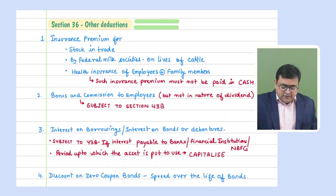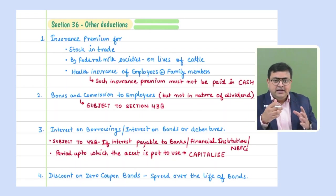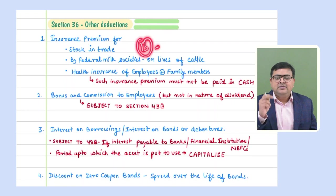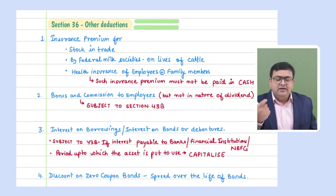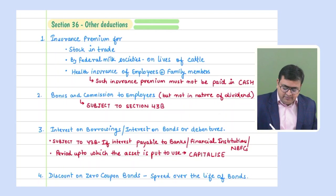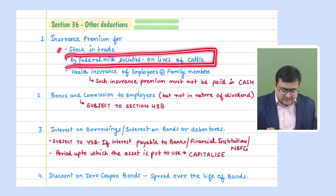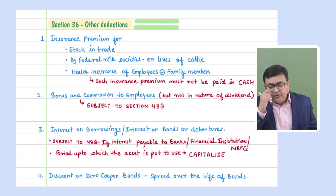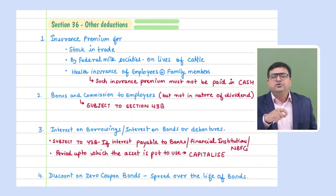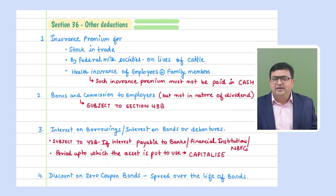First, insurance premium: if it's for a building it's under Section 30; for plant, machinery or furniture it's under Section 31. For other cases — such as insurance premium for stock — it is covered under Section 36. There are also federal milk cooperative societies like Amul; if they pay insurance premium for cattle owned by their members, that is also allowed under Section 36.